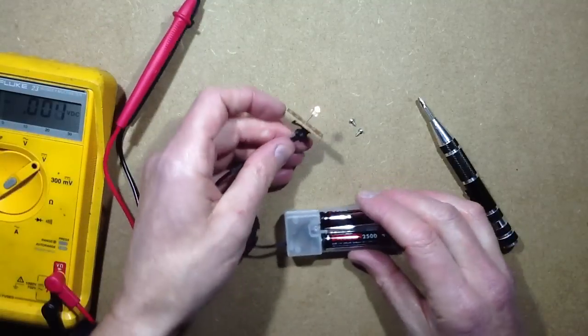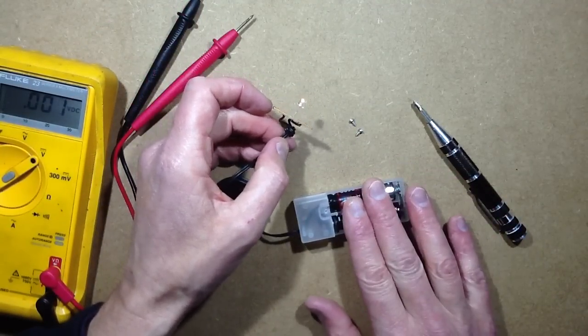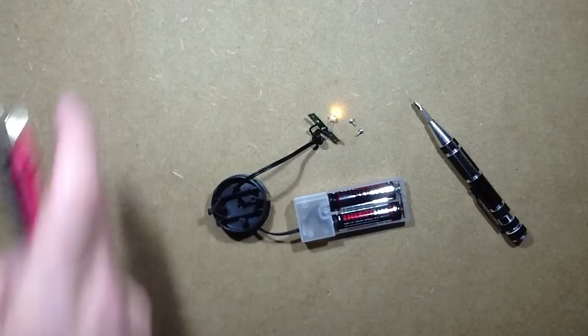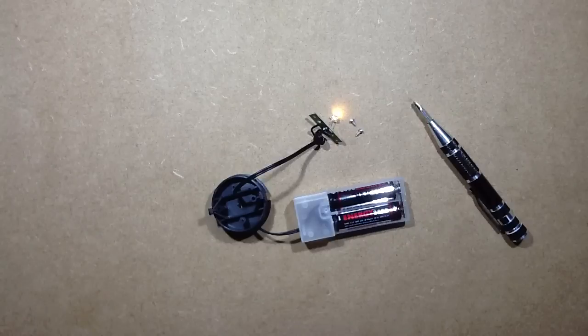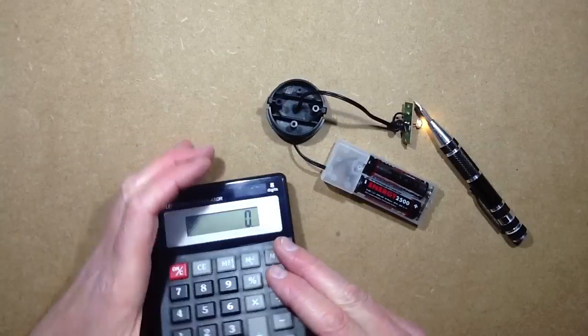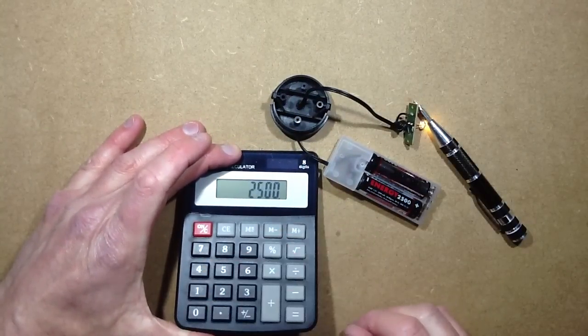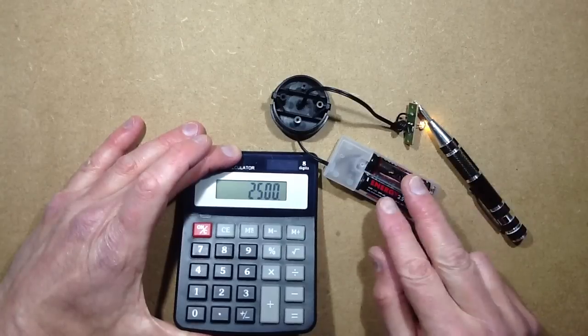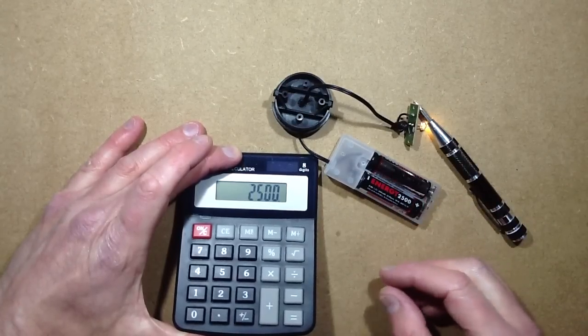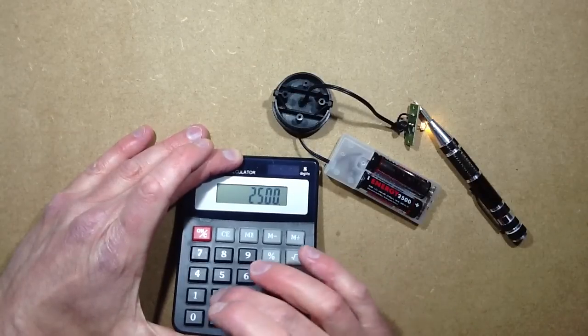If you consider that these are 2,500 milliamp-hour cells, then on a full charge, 2,500 milliamp-hours, that means that if you're just drawing 1 milliamp from these cells, they're technically speaking going to last for 2,500 hours. And if you then divide that by 24...